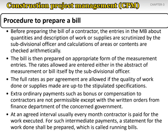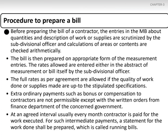Before preparing the bill of the contractor, the entries in the MB — the measurement book — about quantities and the description of work or suppliers are scrutinized by the subdivision official. Calculations of areas or content are checked, and the bill is then prepared on the appropriate form based on the measurement entries.